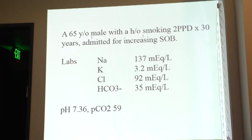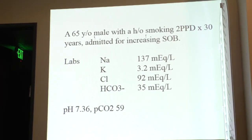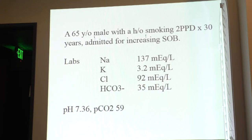Next case: 65-year-old male, smoking two packs per day for 30 years, admitted for increased shortness of breath. Sodium 137, potassium 3.2, chloride 92, bicarb 35, pH 7.36, pCO2 59. Bicarb is high, pH is low — so that points to respiratory acidosis. Now check compensation.